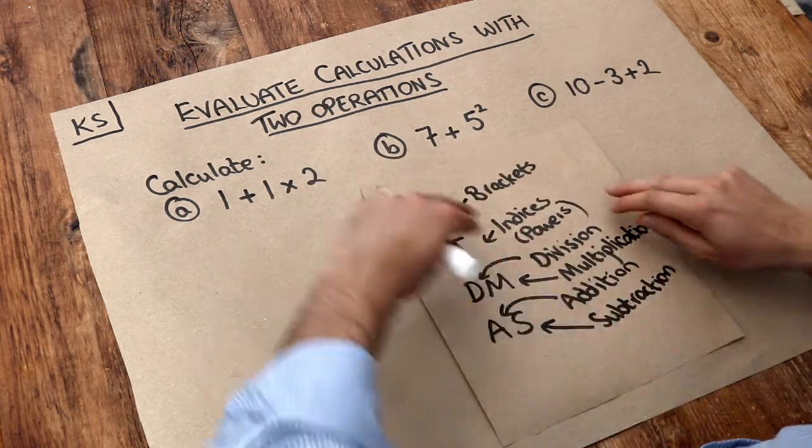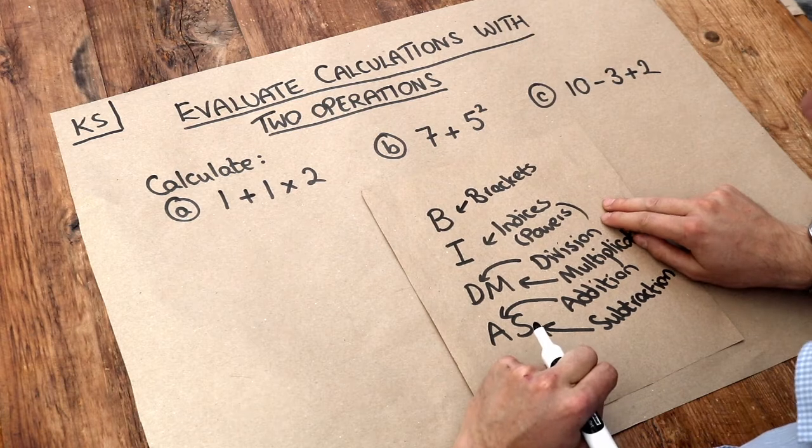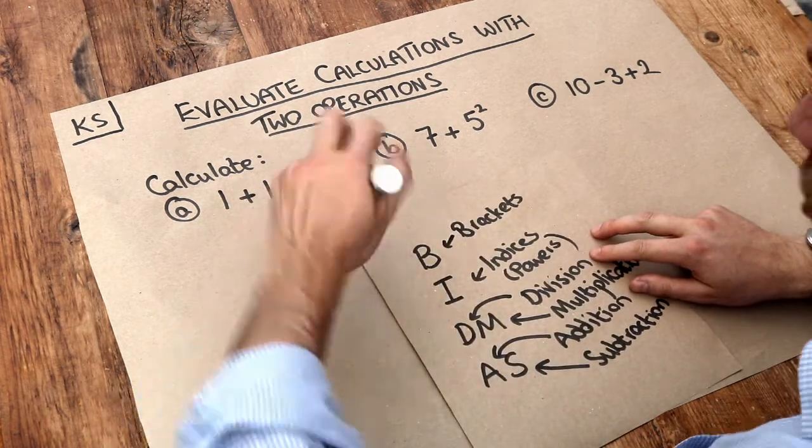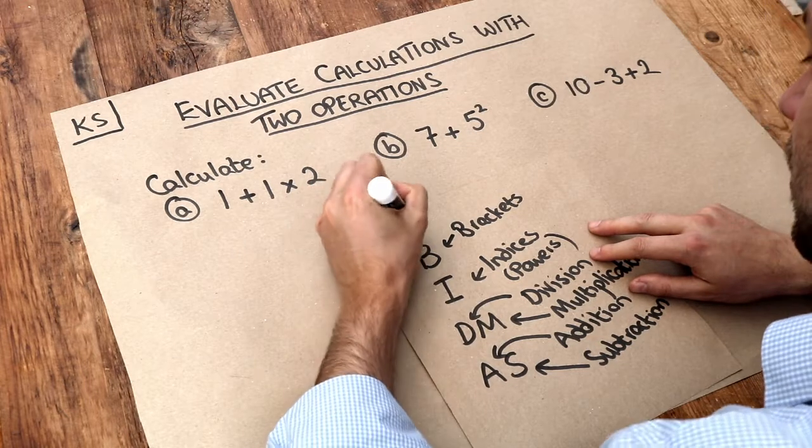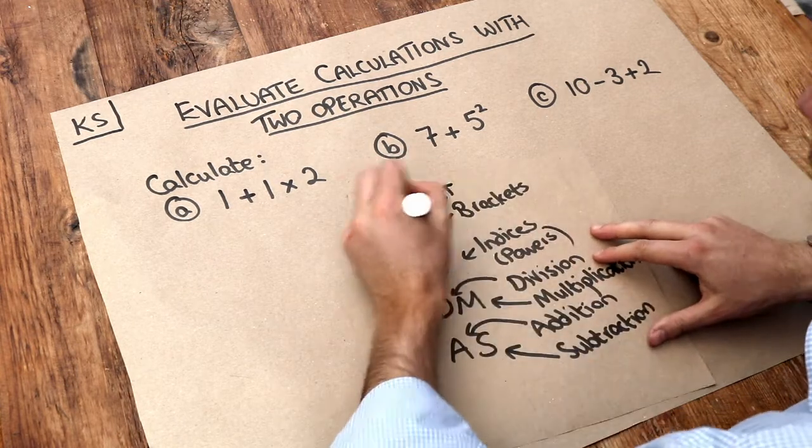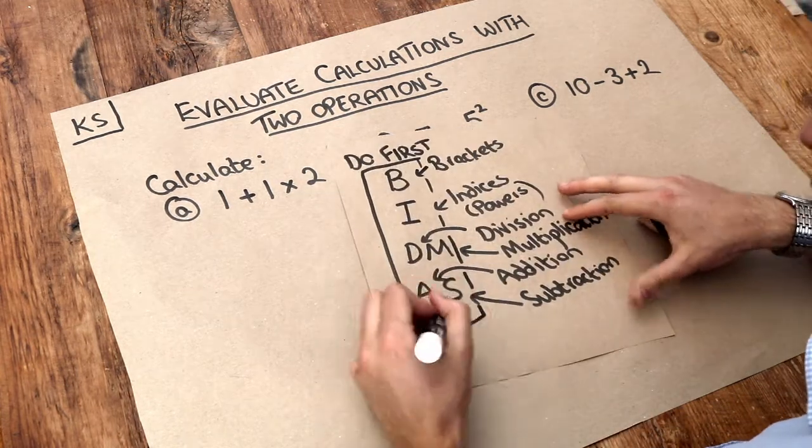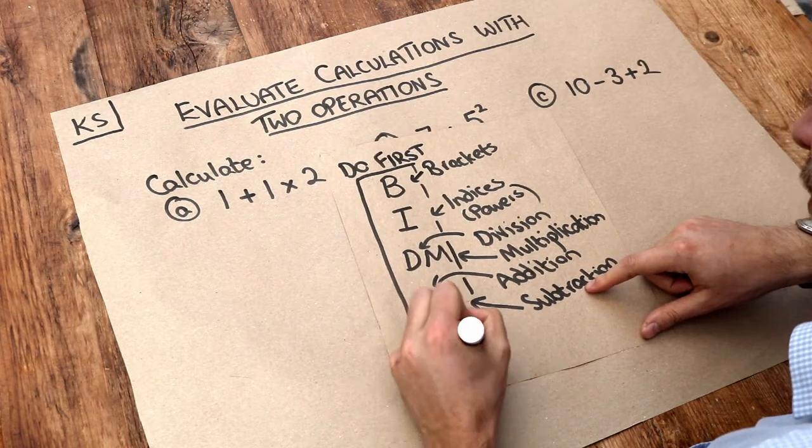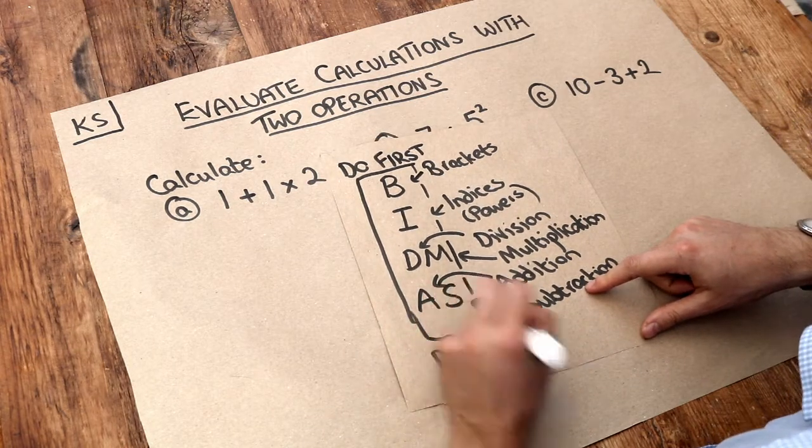And basically this is like a priority order in which you do things within a mathematical expression. So anything that's towards the top you do first. So if we see brackets, we would always do that first, and we see that in a later video. And at the bottom we do these things like addition and subtraction last. And this will hopefully become clear when we do a few examples.